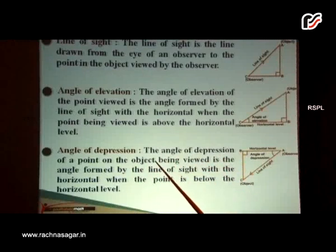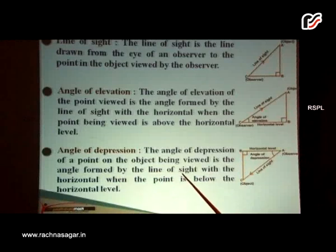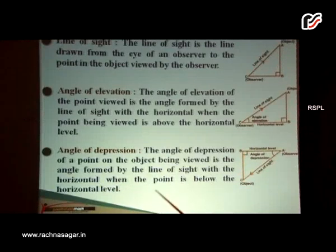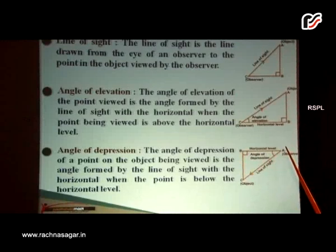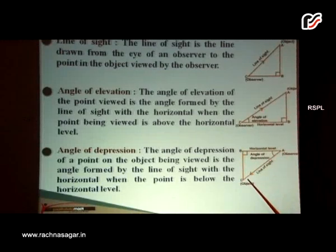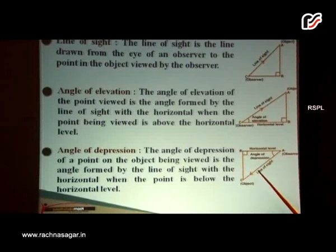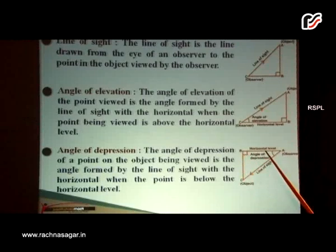The angle of depression of a point on the object being viewed is the angle formed by the line of sight with the horizontal when the point is below the horizontal level. Here, the observer is at A, AB is the horizontal level through A, and the object to be viewed is at C. Then AC is the line of sight. Because the object to be viewed is below the horizontal level, the angle between the line of sight and the horizontal, that is angle BAC, is known as the angle of depression.